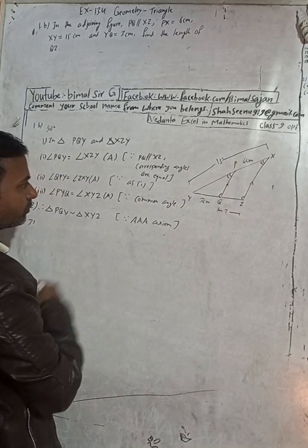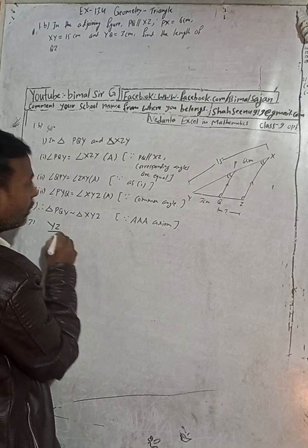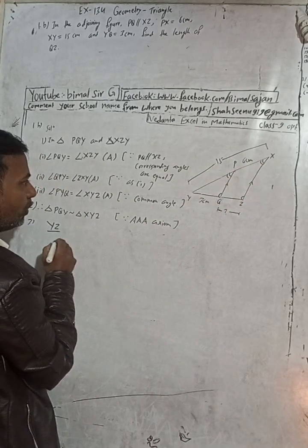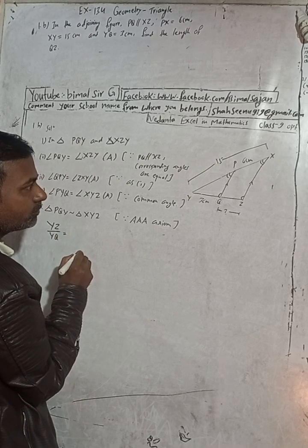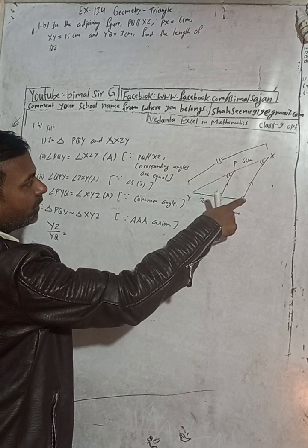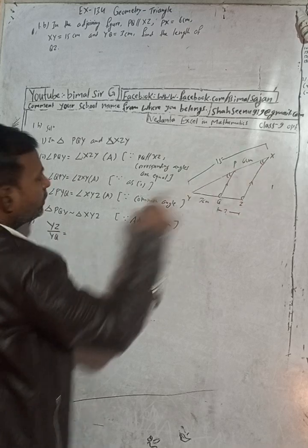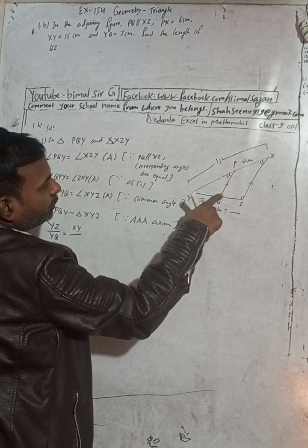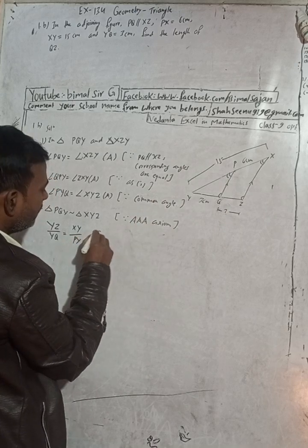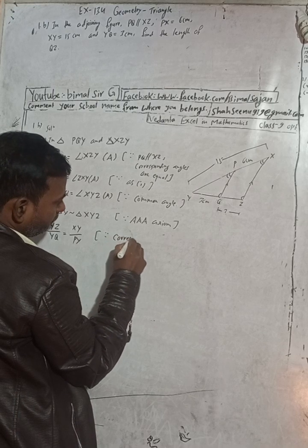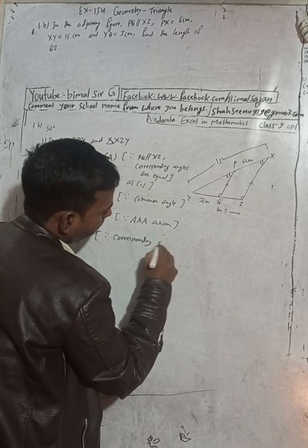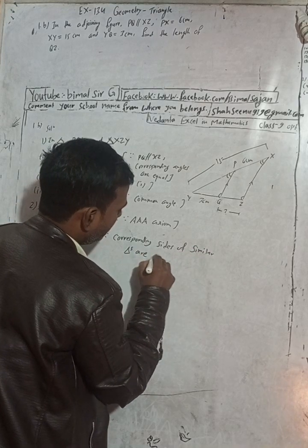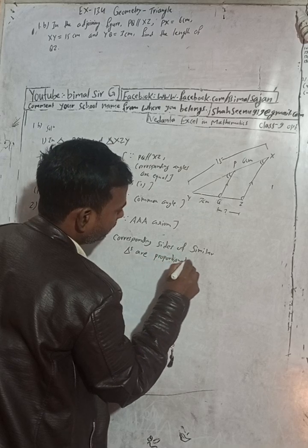In the bigger triangle, the side corresponding to QZ is YZ. And the side corresponding to PY in the bigger triangle is XY. Since the sides of similar triangles are proportional, we can write: YZ over YQ equals XY over PY.